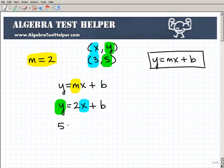So this would be 5 equals 2 times 3. Okay? So you can see I'm getting the 3 and 5 information right here, plus b. So 5 is going to be equal to 6 plus b.